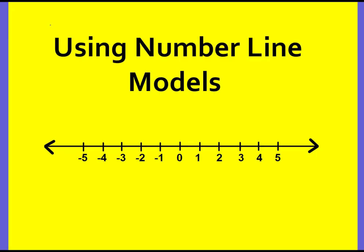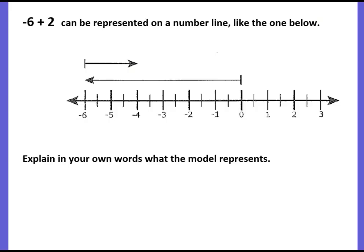Today we're going to do something a little different. We're going to model combining integers using number lines, and we're going to learn how to read number line models. You will need your notes worksheet and fill it out as we go through the video. Make sure you pause when needed so you can get all of your notes down. Negative 6 plus 2 can be represented on a number line like the one below — pause the video and explain in your own words what the model represents.